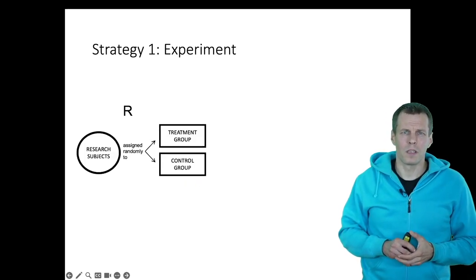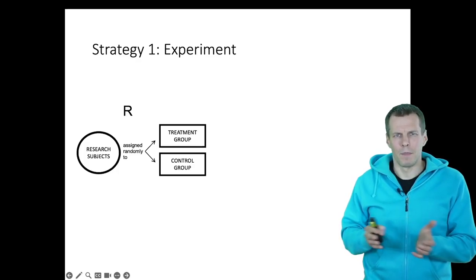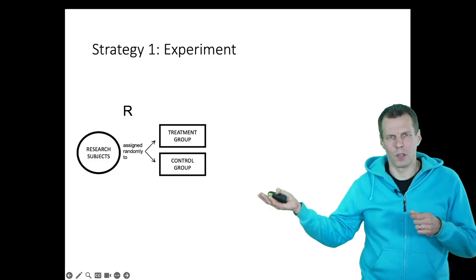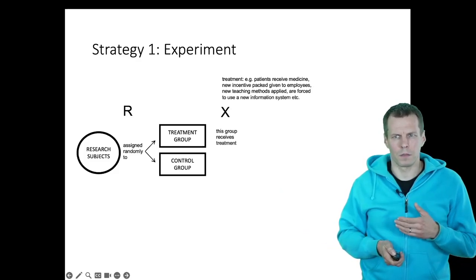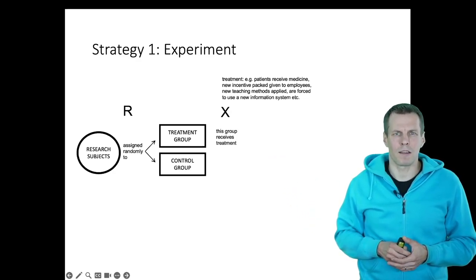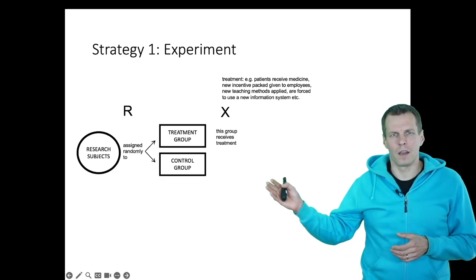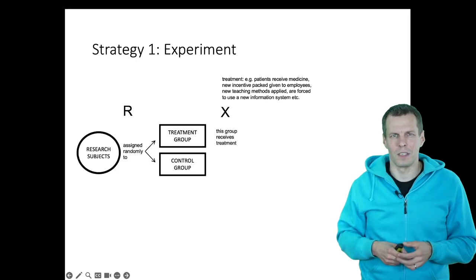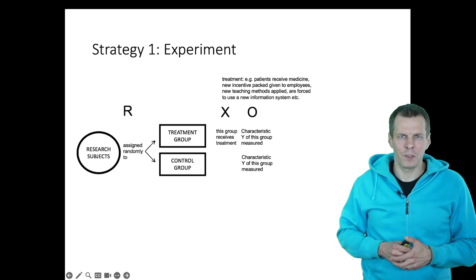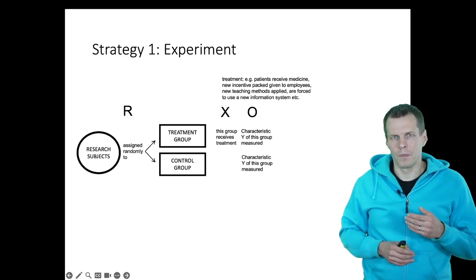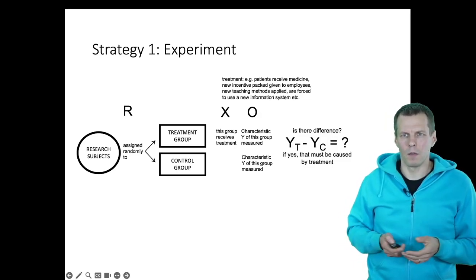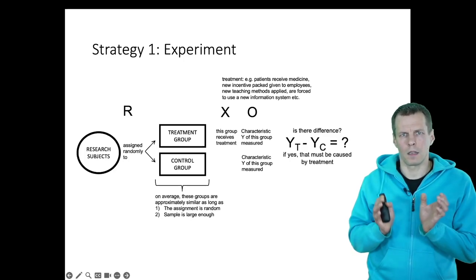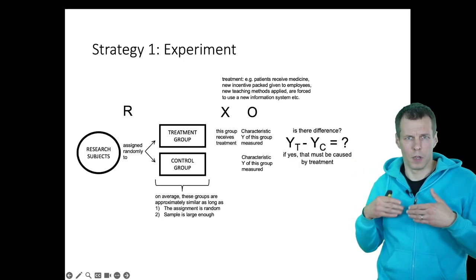The experiment is the simplest possible quantitative research strategy. You take your sample, randomly divide it into two groups, one receives the treatment — say, assigned a woman CEO — and the other is the control group, assigned a man CEO. You then measure the outcome sometime later. If the treatment group is more profitable, because of randomization the two groups are statistically comparable, so the only explanation for any difference is the treatment itself.